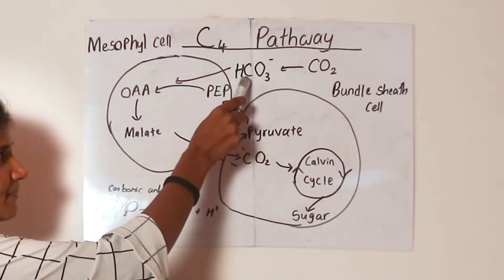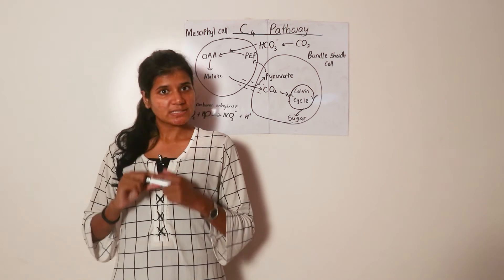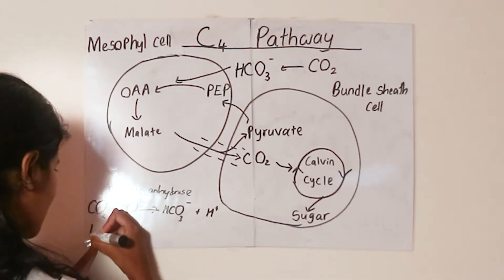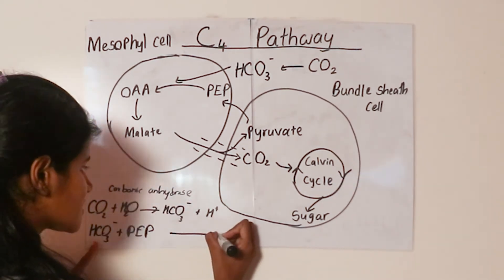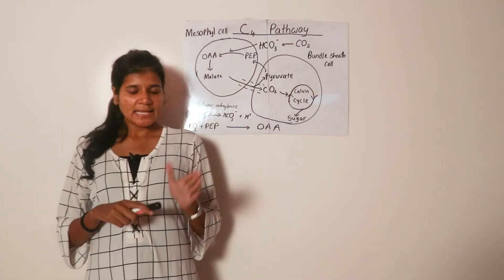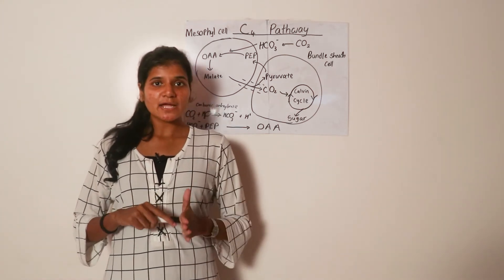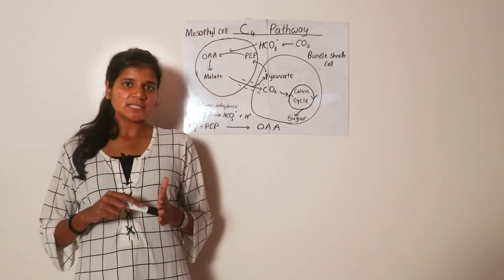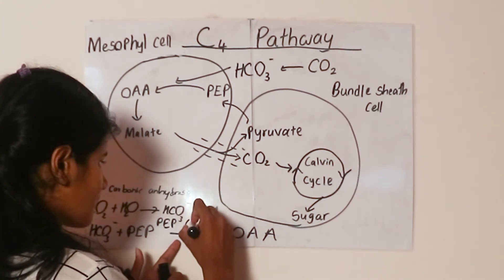PEP reacts with bicarbonate and forms the first stable product of C4 photosynthesis — we call it oxaloacetic acid, or OAA. So the reaction is: bicarbonate with phosphoenol pyruvate (PEP) forms oxaloacetic acid. This oxaloacetic acid is a four-carbon product and is the first stable product in C4 plants. This reaction is catalyzed not by RuBisCO, but by PEP carboxylase — the carbon dioxide fixing enzyme found in the mesophyll cells.